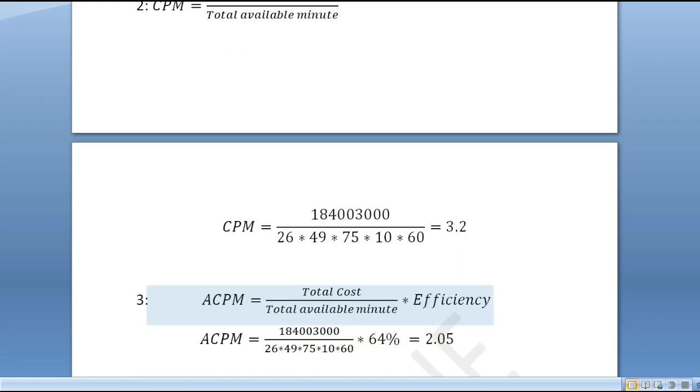This is the actual CPM. The cost per minute value is the CPM. For ACPM, it's the same formula. CPM at 64% efficiency gives us 0.64, so we get 2.05.